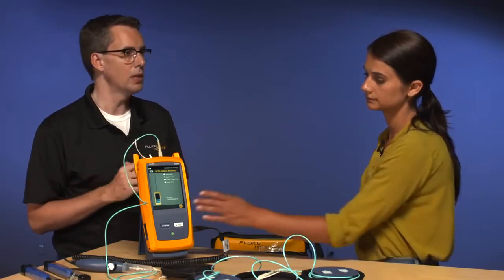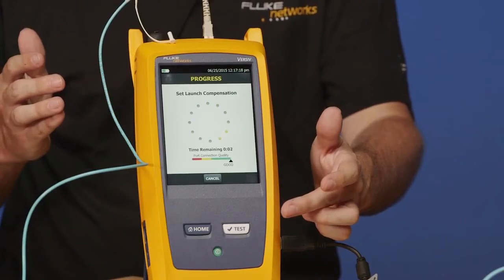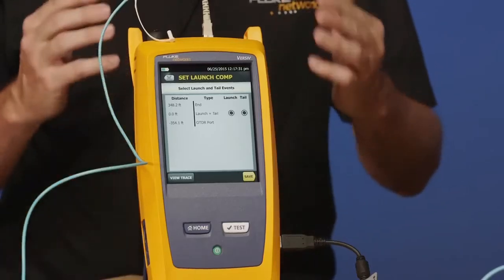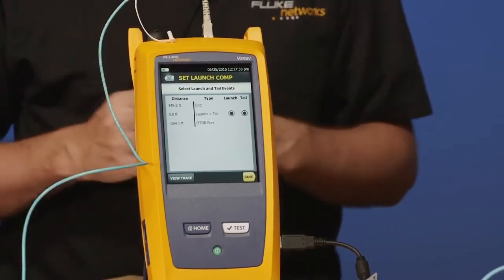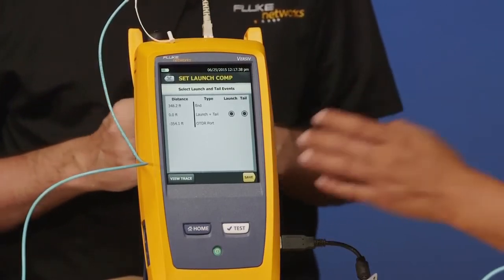So we're ready, set, go ahead and tap set. And you'll notice on here the OTDR port connection quality is shown every time. That tells me my OTDR port connection is good. So on the screen here we see the length of our launch fiber and the length of our tail fiber. I think we're pretty much good to go. So go ahead and tap save.